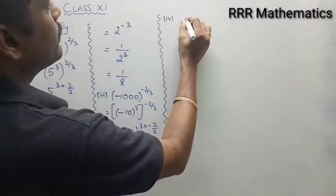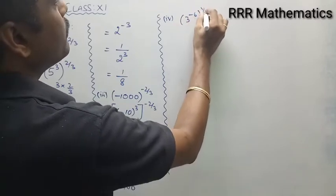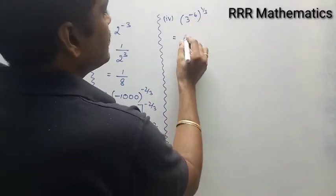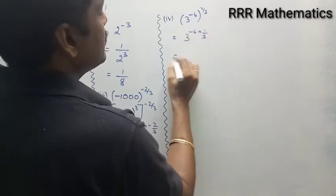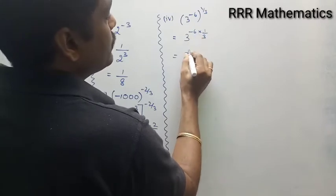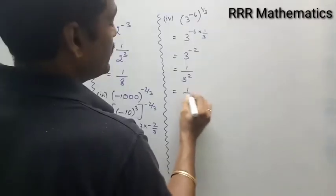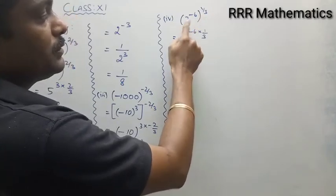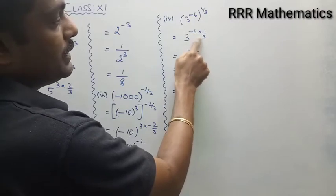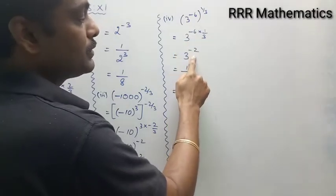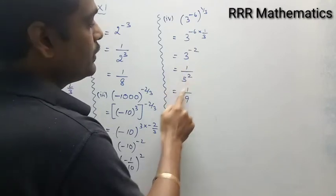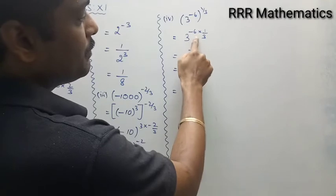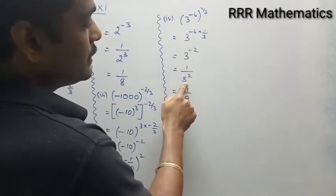Fourth problem: 3 power minus 6, whole power 1 by 3. Here the base is 3, which is already a prime number, so keep it as is. Multiply the powers: minus 6 × (1/3). The 3 cancels twice, giving 3 power minus 2. When it comes to the denominator: 1 by 3 power 2, which gives 1 by 9.